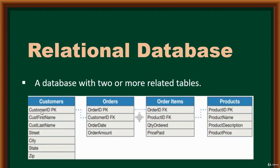Looking at the customers table, there's a customer ID column. The orders table also has a customer ID column. The dot represents the relationship between those tables. Similarly, the order items table and orders table share an order ID, and the products table and order items table share a product ID — each dot represents a relationship.